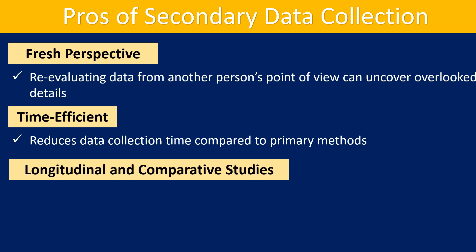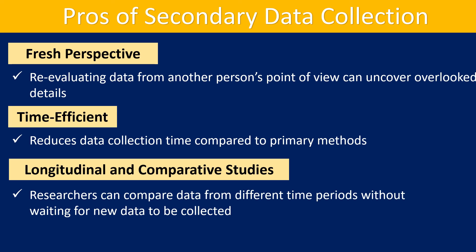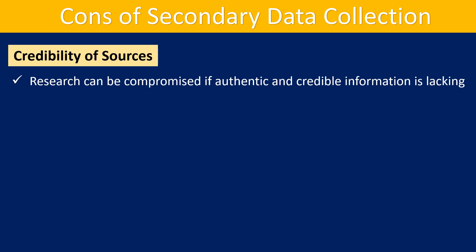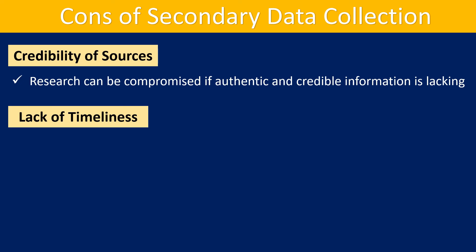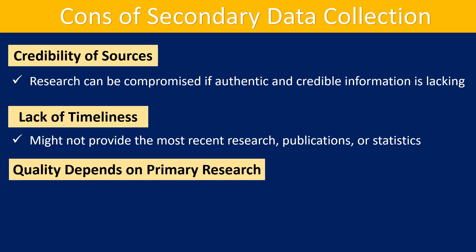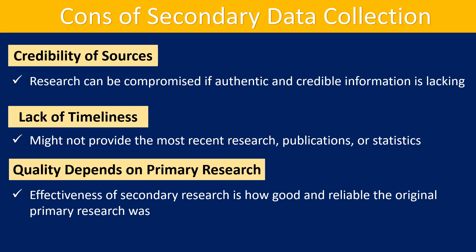Longitudinal and comparative studies are also a benefit of secondary data. On the other hand, research can be compromised if authentic and credible information is lacking. Lack of timeliness is another concern — the majority of secondary data sources might not provide the most recent research, publications, or statistics. Accurate data does not always imply up-to-date data. Additionally, quality depends on primary research — the effectiveness of secondary research relies on how good and reliable the original primary research was.